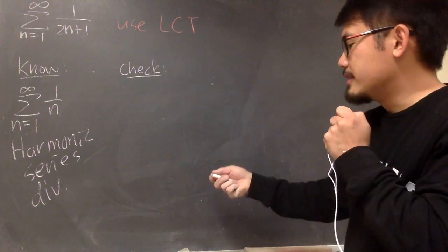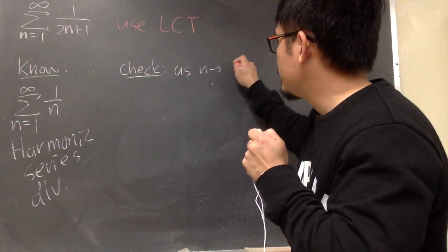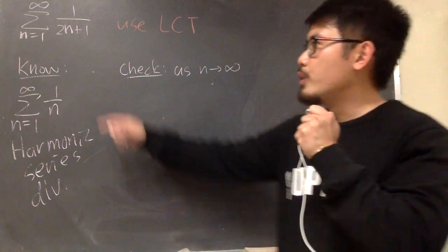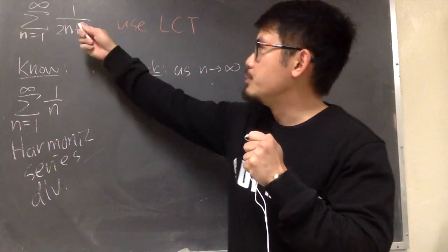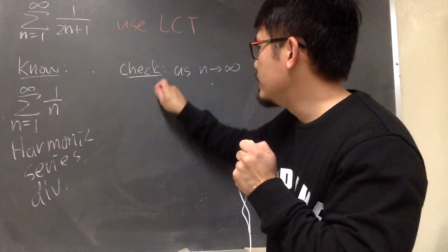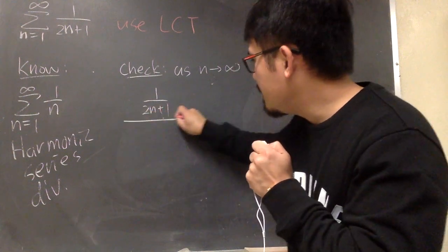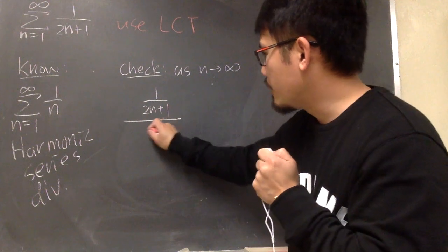For the limit comparison test, we are taking the limit. So I will say, as n goes to infinity. And it doesn't really matter which one you put on the top. But I will just put down the one I'm trying to show on the numerator, which is 1 over 2n plus 1, divided by the one I know on the denominator, which is 1 over n.